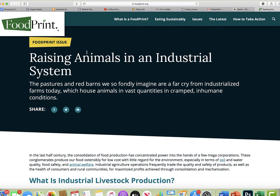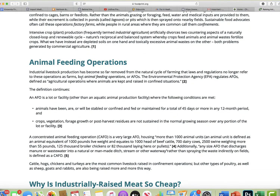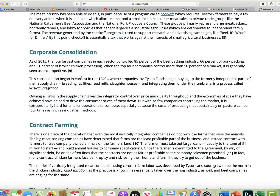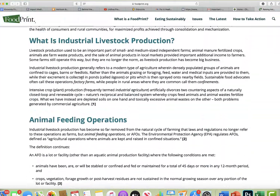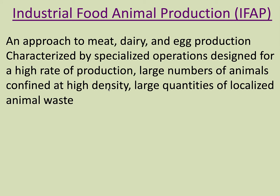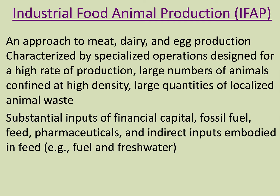Here's a link — a quick summary of raising animals in an industrial food system, which covers a lot of what the book discusses. Industrial food animal production is an approach to meat, dairy, and egg production characterized by specialized operations designed for high-rate production, large numbers of animals confined at high density, large quantities of localized animal waste, and substantial inputs including financial capital, fossil fuels, feed, and pharmaceuticals. All of this has a large impact on our environment.